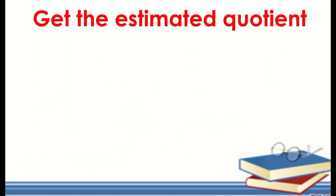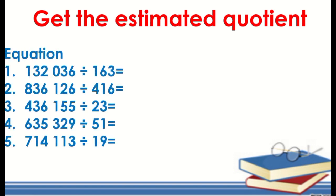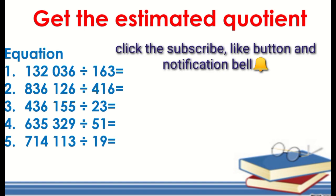Now let's do these exercises — a math challenge — so you can apply the shortcut method if possible. We have: 132,036 divided by 163; 836,126 divided by 426; 436,155 divided by 23; 635,329 divided by 51; and 714,113 divided by 19. I'll give you a minute or two to finish this math challenge. You may now start.